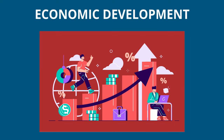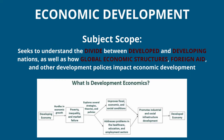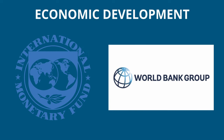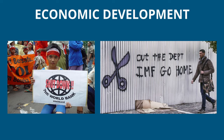Finally, we have economic development. Here, we are trying to understand the ways in which countries can promote economic growth and development, reduce poverty, and improve living standards. IPE analyzes the ways in which domestic policies and institutions, as well as global economic factors, can influence economic development. The role of international organizations such as the World Bank and International Monetary Fund in providing economic development is also important. These institutions provide loans and technical assistance to developing countries, but they have been criticized for promoting policies that disproportionately favor wealthy Western countries and acting as an extension of multinational corporations.